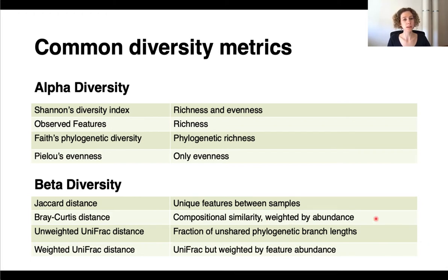We have unweighted UniFrac distance, that is defined as the fraction of unshared phylogenetic branch length, which is quite a mouthful, but you'll have a separate tutorial on beta diversity metrics. And the weighted UniFrac is the same, but just weighted by feature abundance.